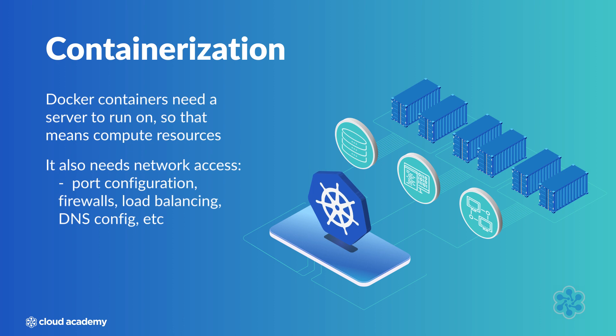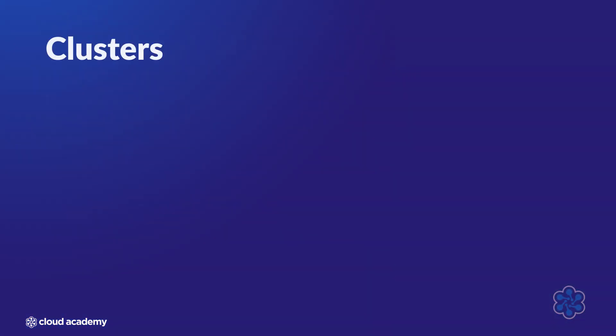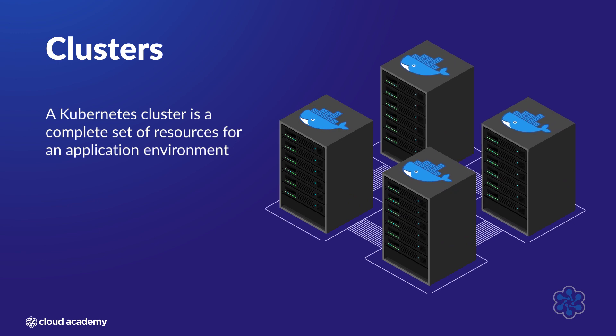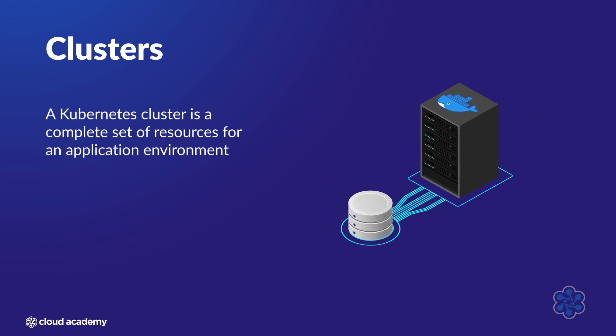Kubernetes, like other orchestration frameworks such as Docker Swarm, Mesos, and Marathon, makes all of this work much easier. It starts with the concept of a cluster. A Kubernetes cluster is a complete set of resources for an application environment — hardware resources. In general, this will be confined to a single data center and will comprise a number of servers and network interfaces. Storage is also a possible resource, as Kubernetes can create ephemeral and persistent volumes. The servers — whether physical machines or VMs running in EC2, Google Cloud Compute, or somewhere else — are referred to as nodes.